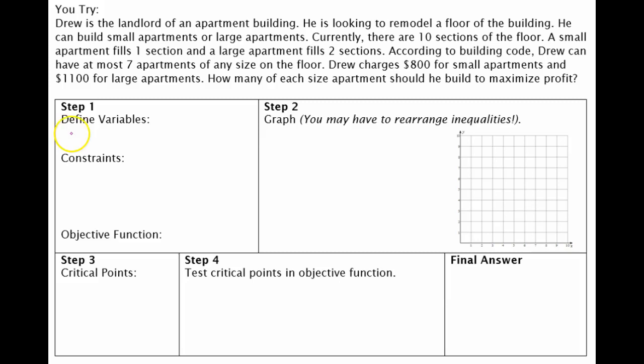Those are the two things that Drew is looking into building. So this is going to be x is going to be my small apartments, and then y will be my large apartments. Okay, so now our constraints.